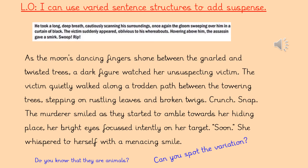Thinking about your LO — using varied sentence structures, so those long and short sentences — listen to these two extracts and see if you can spot how they've done this. 'He took a long deep breath, cautiously scanning his surroundings. Once again, the gloom sweeping over him in a curtain of black. The victim suddenly appeared, oblivious to his whereabouts. Hovering above him, the assassin gave a smirk. Swoop. Rip.'